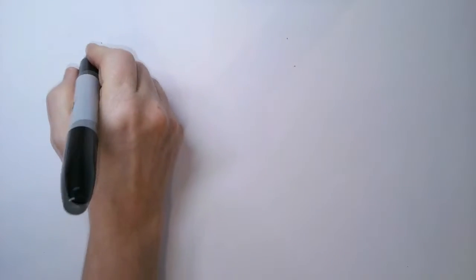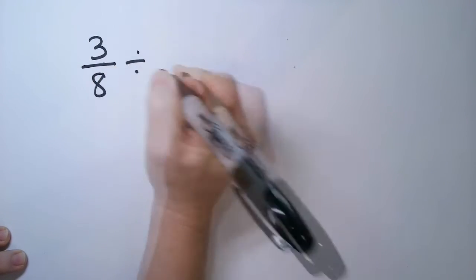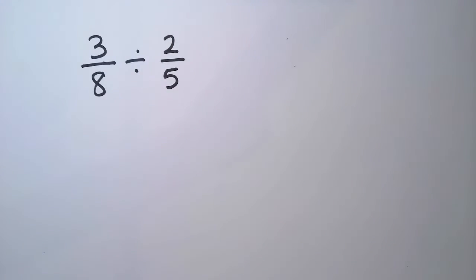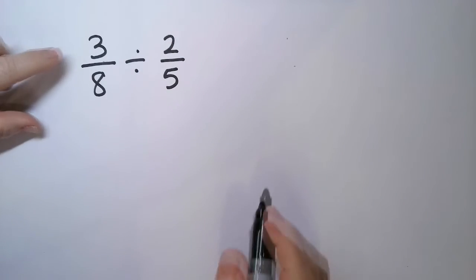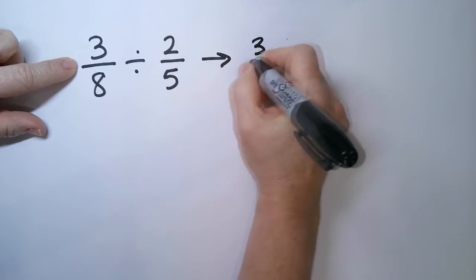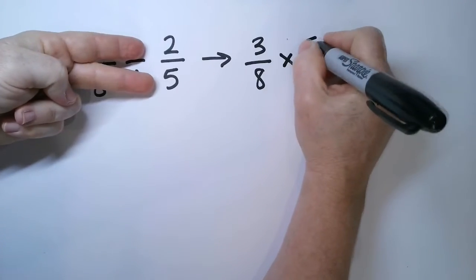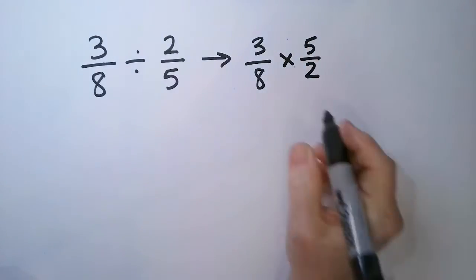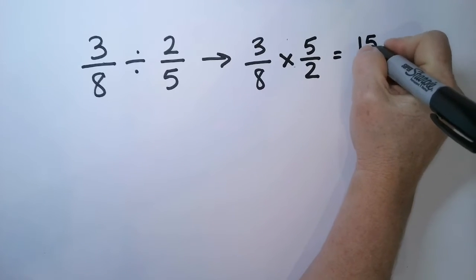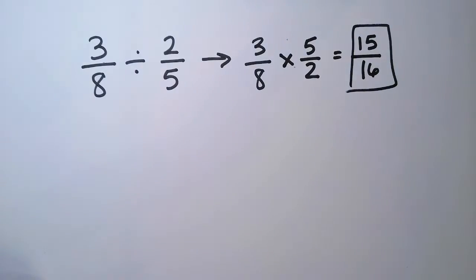So if I have the number 3 eighths and I want to divide that by 2 fifths, how does that work? I'm going to rewrite it and turn it into a multiplication problem. I'm going to take 3 eighths, multiply it by — and then flip this one — 5 over 2. Then we just multiply the tops and multiply the bottoms. So I have 15 over 16 as my answer.